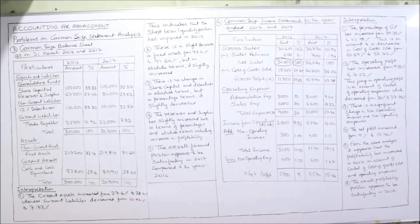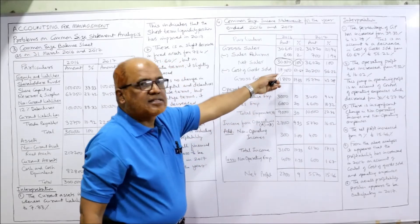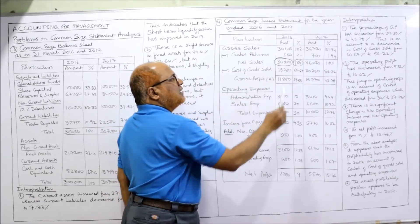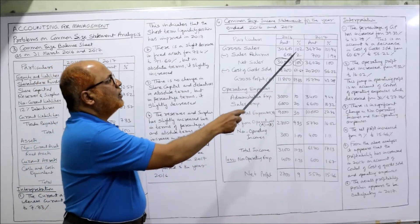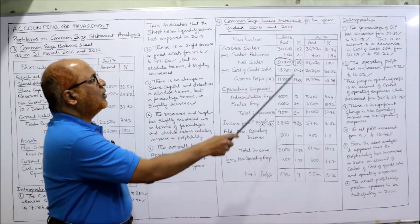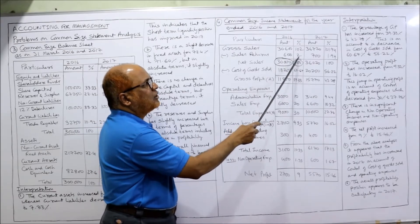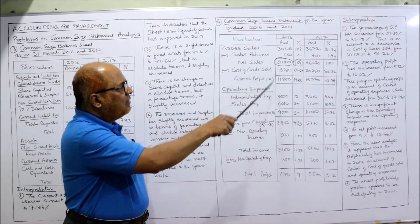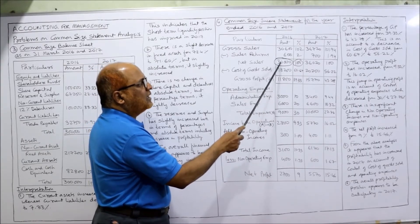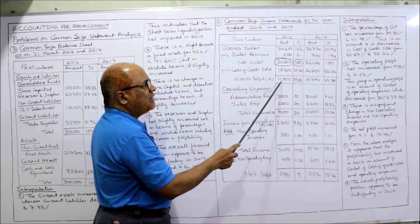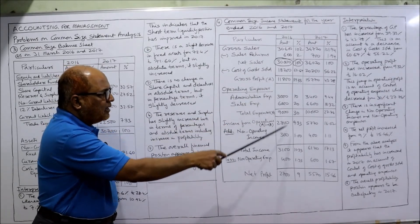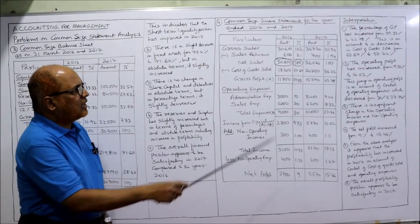With net sales as 100%, gross sales of 30,600 divided by 30,000 × 100 = 102%. Sales returns: 600 divided by 30,000 × 100 = 2%. Cost of goods sold: 18,200 divided by 30,000 × 100 = 60.67%. Gross profit: 11,800 divided by 30,000 × 100 = 39.33%. Take each individual value in the numerator and 30,000 as the denominator to get all percentages.